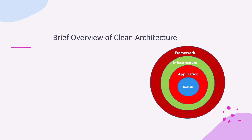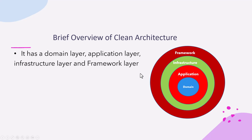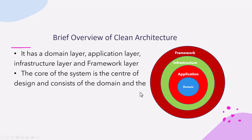Let's see a brief overview of clean architecture. You can see that this has got a domain layer at the core, at the center. Surrounding the domain layer is the application layer. Both application and domain comprise the core. The next outermost layer is infrastructure, followed by the last outermost layer which is the framework layer. The core of the system consists of the domain and the application layers.